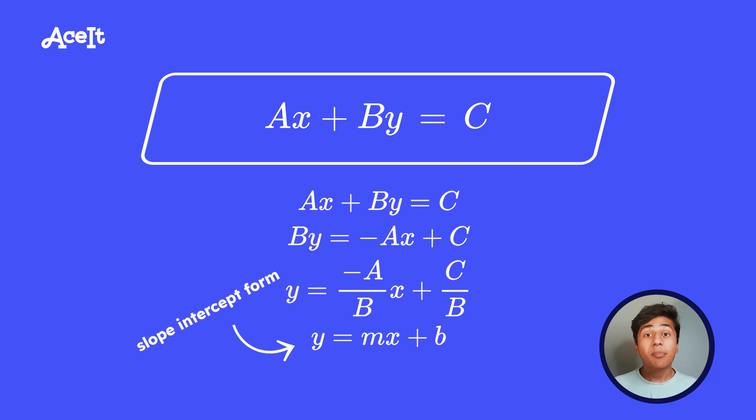The last type of linear equation you need to know is point-slope form. And this is used when you're given a point and a slope, and you need to make an equation out of it. So point-slope form is y minus y1 equals m times (x minus x1), where x1 and y1 are numbers from the given point. So for example, if we're given a slope of 3 and a point of (-2, 1), we would achieve y minus 1 equals 3 times (x plus 2).